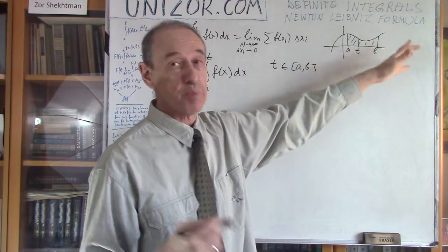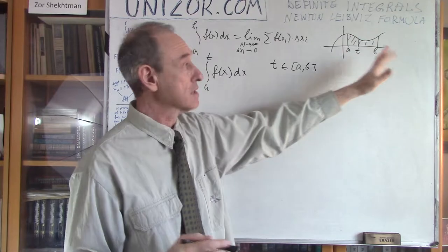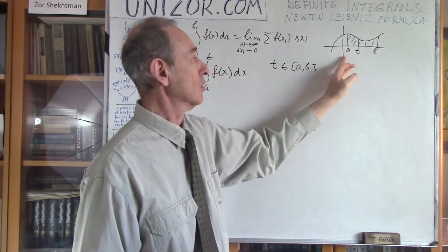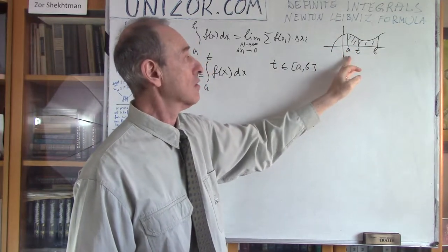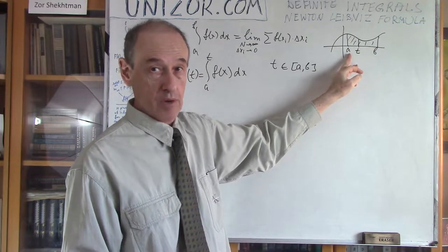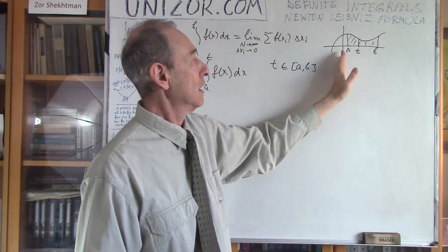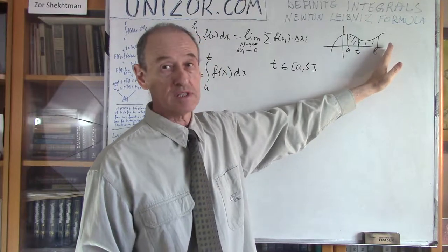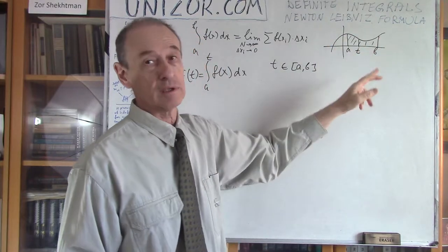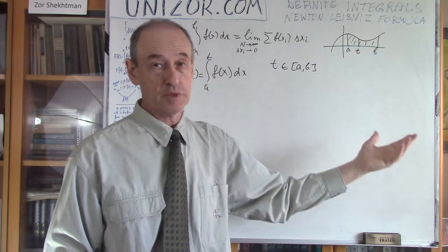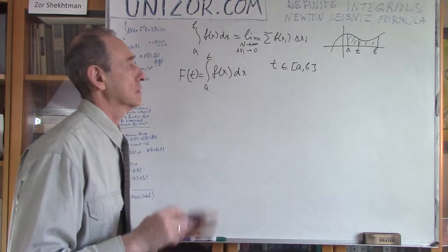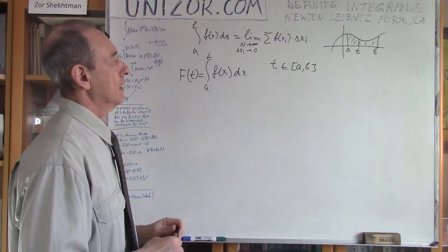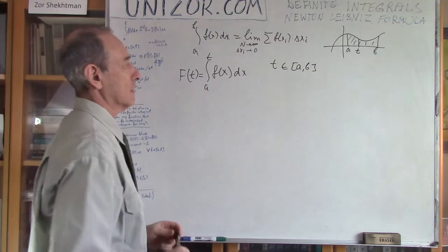If we assume the function is positive, then F(t) is increasing from zero when t coincides with A — the area is equal to zero — then growing up to the point when t equals b, giving the full integral from A to B. But that's just an observation. So let's consider this function F(t).